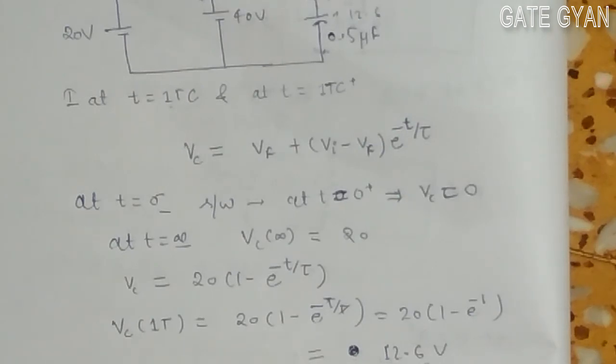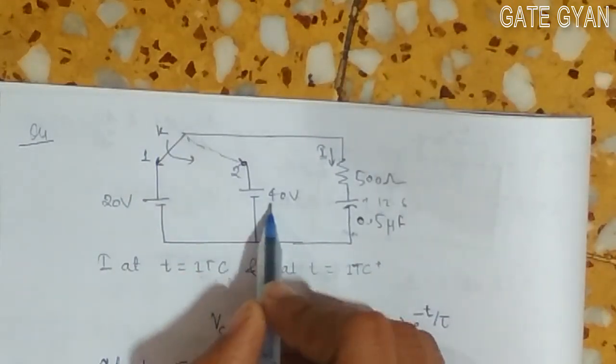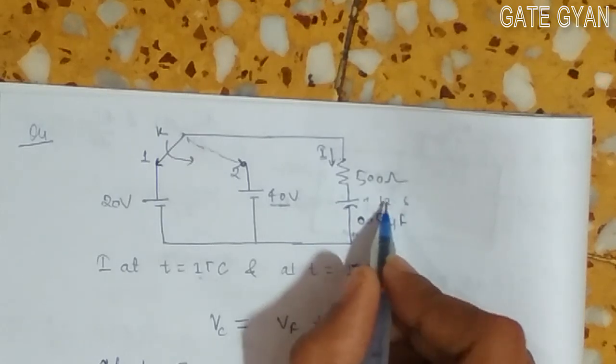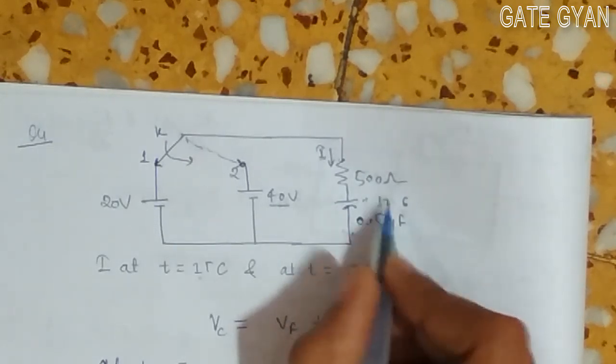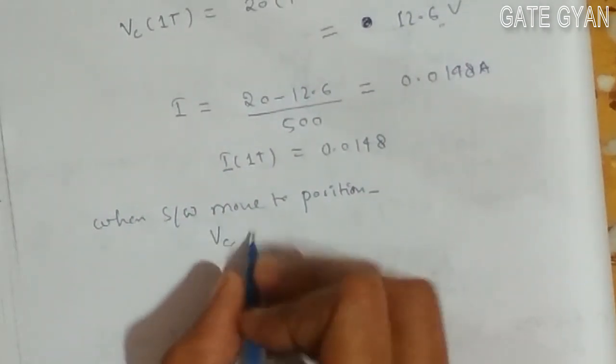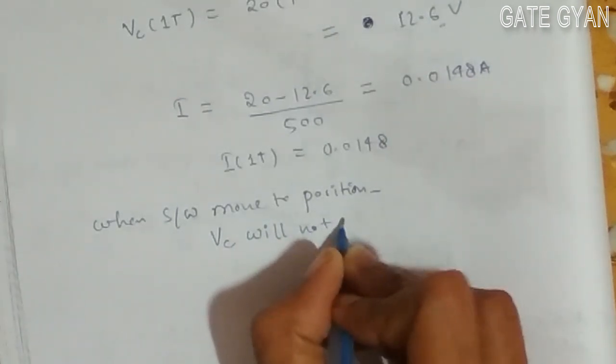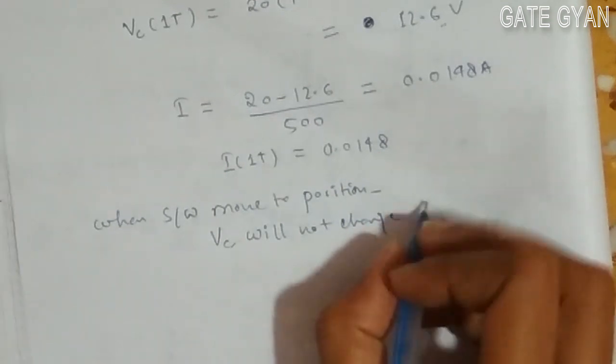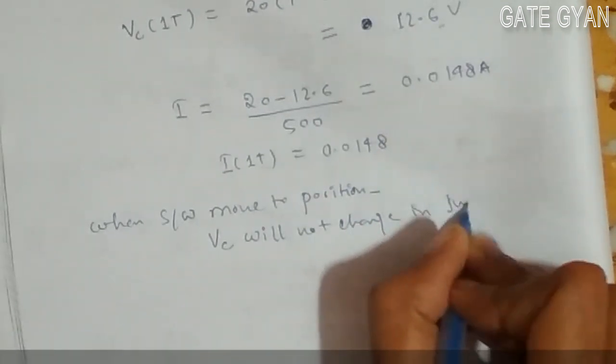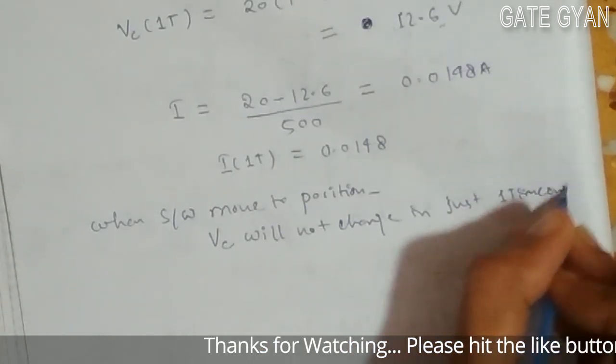My vc value will not change. vc at 1 time constant will be same, but my final value of vc will change. To find this current, I will get 40 volt minus this 12.6, because it is not going to change, upon 500. vc will not change in just 1 time constant.